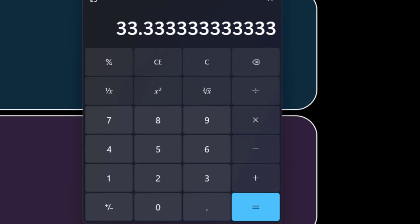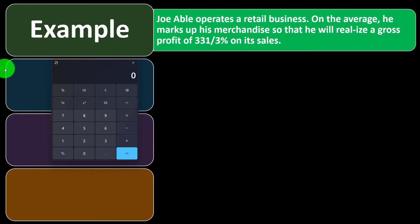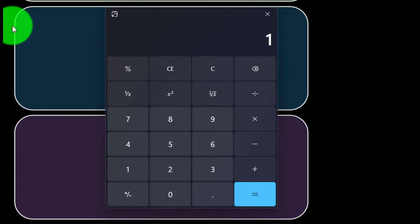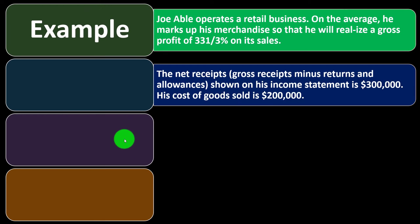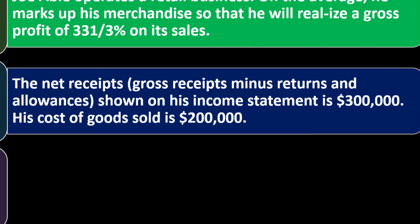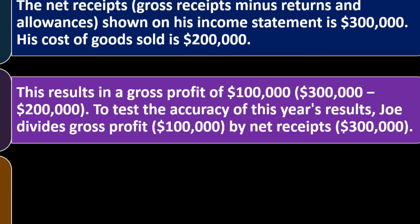That gives us about $33.33. We can also calculate it this way: 100% of the selling price plus the 33.33% markup equals 1.3333 times the cost of $100, giving us $133.33. So that's the general markup policy. The net receipts — gross receipts minus returns and allowances — on his income statement is $300,000. His cost of goods sold is $200,000, resulting in a gross profit of $100,000.